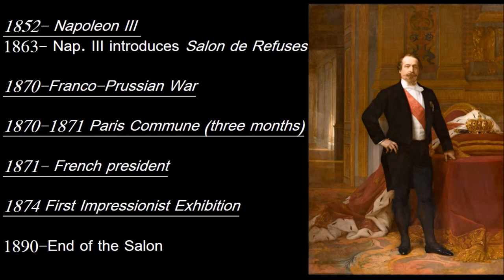Looking at the events around this time: 1852 was the rise of Napoleon III. In 1863, we have the Salon des Refusés — the famous show where Manet gets his bigger start in the public eye. Then we have the Franco-Prussian War, and 1874 is the first Impressionist exhibition, an important date to remember in connection with all of these things.